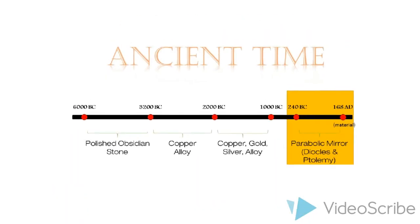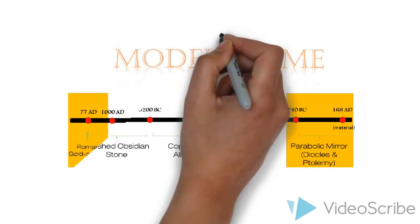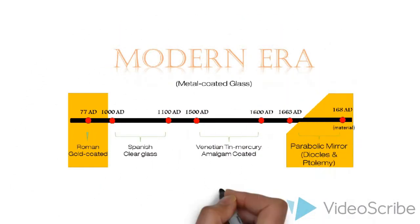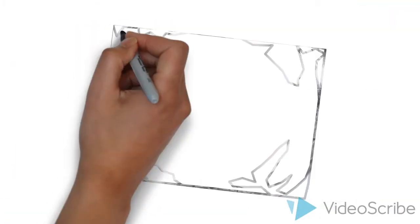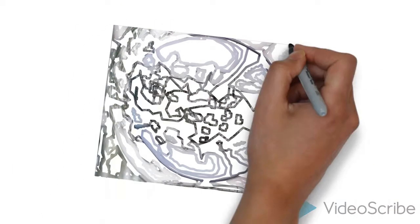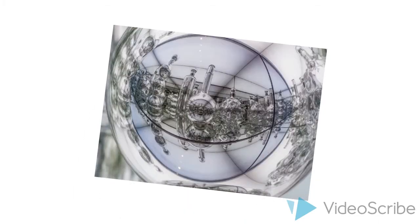Glass mirrors, backed with gold leaf, are mentioned by the Roman author Pliny in his work Natural History, written in about 77 AD. The Romans also developed a technique for creating crude mirrors by coating blown glass with molten lead.